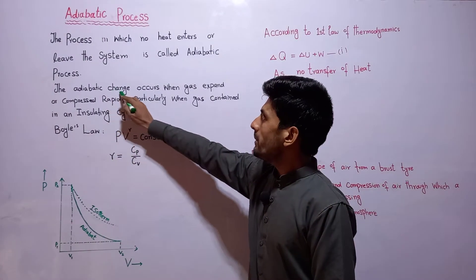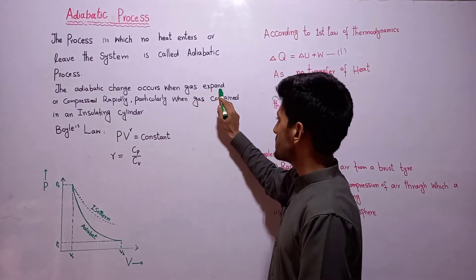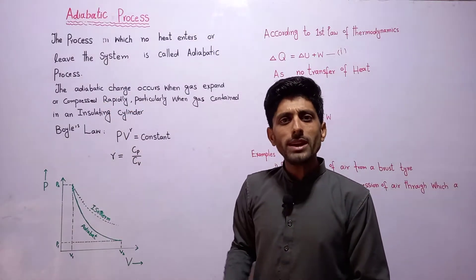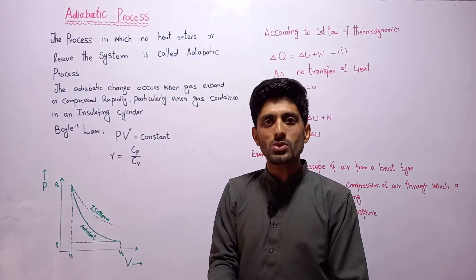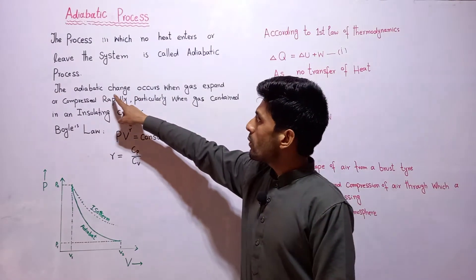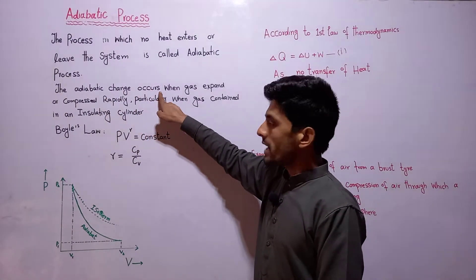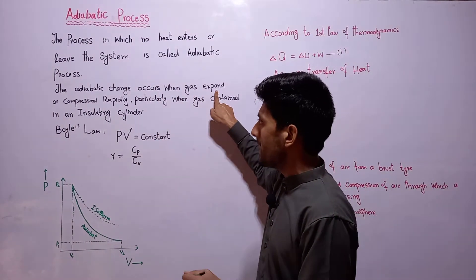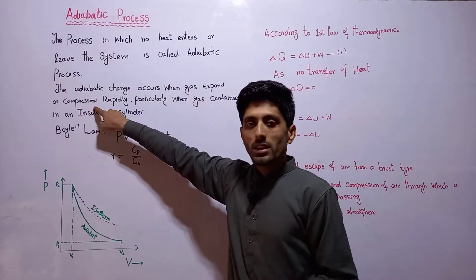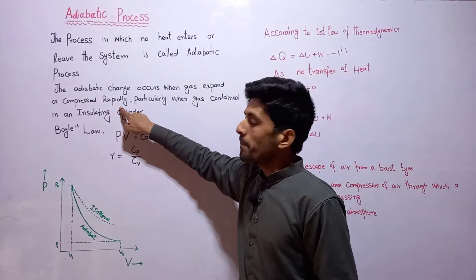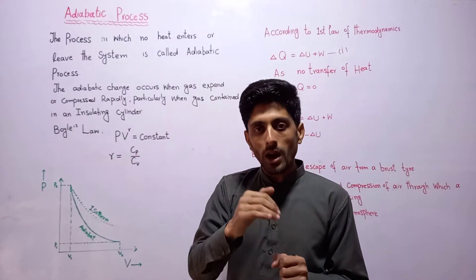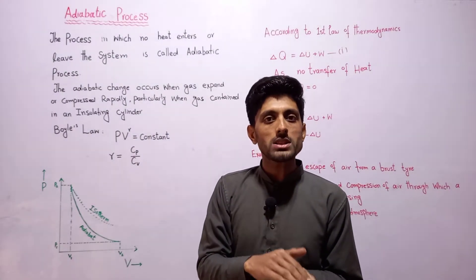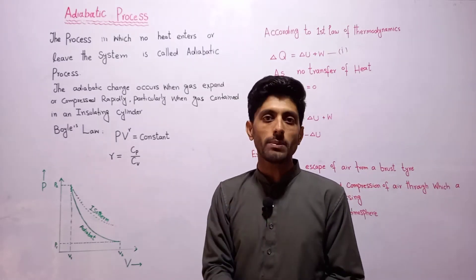Next is a quick explanation. An adiabatic change occurs when the gas expands or compresses rapidly. In the previous lecture, isothermal process was a slow rate process. To ye kaise hai? Ismein bol raha hai adiabatic change kab hote hain? When the gas expands ya compress hota hai rapidly — fast taisi se gas ko compress kare. Fast compression or fast expansion of a gas is said to be an adiabatic process.